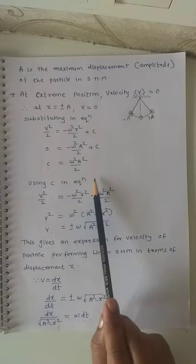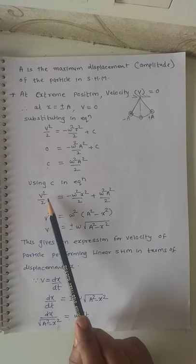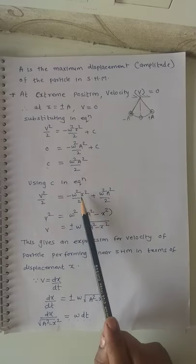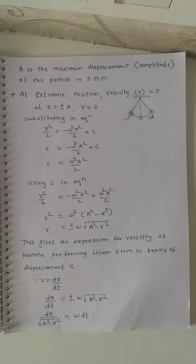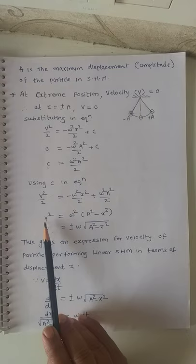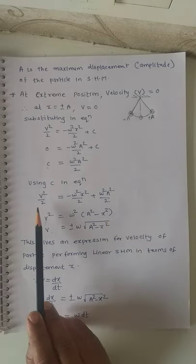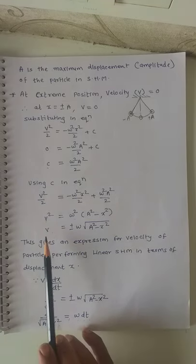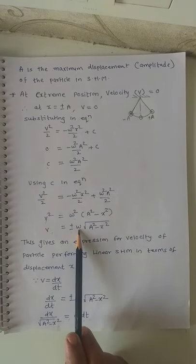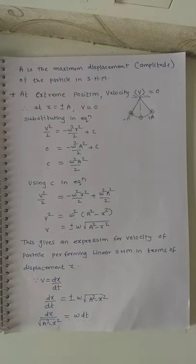Substituting this constant C = ω²A²/2 back into the equation: v²/2 = −ω²x²/2 + ω²A²/2. Taking the ½ common and cancelling, we get v² = ω²(A² − x²). Taking the square root, v = ±ω√(A² − x²). This equation gives the velocity of a particle performing linear SHM in terms of displacement.